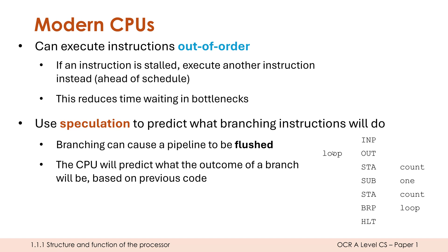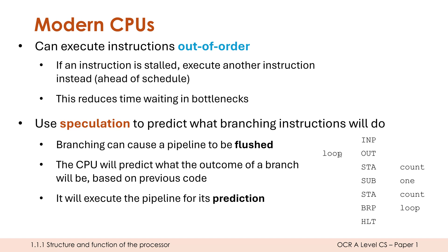The control unit will notice there's a branching command coming up in 20 instructions, and think about what's happened in the past. What is the most likely outcome of this branch — will it continue ahead, or will it branch back up and load in other instructions? Based on this prediction, it will boldly execute the pipeline it thinks is going to happen, which seems quite risky.